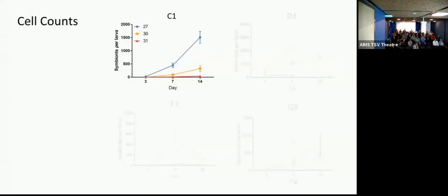And this is what we found. So on the top left, this is just infection of the C1 clades. We've got day on the x-axis, we've got symbionts per larvae on the y-axis. Each of these plots that I'll be bringing up have a different y-scale, so they're just graphs to give you an idea of how they're performing against each other. And the colors represent the temperature of the infection. So blue 27, yellow 30, and red 31.